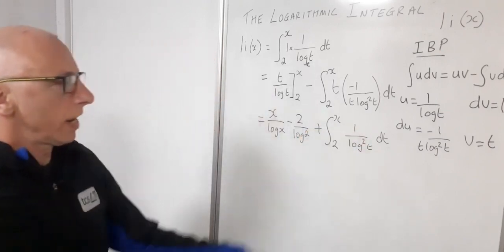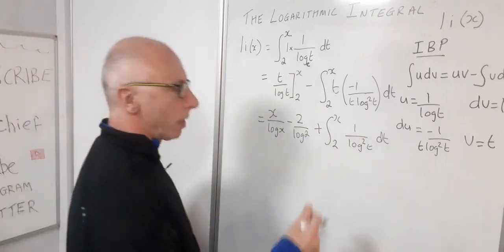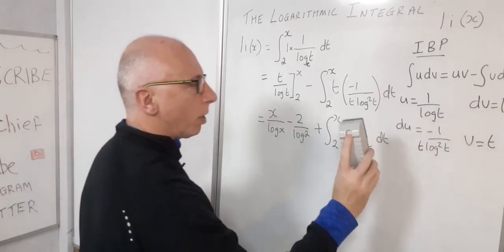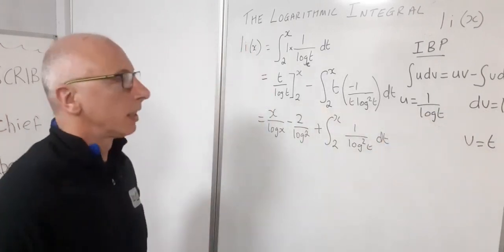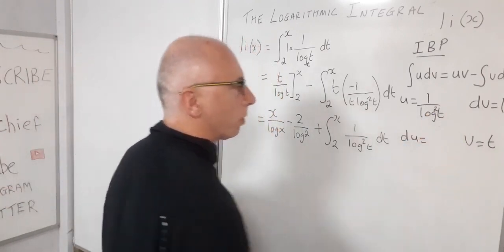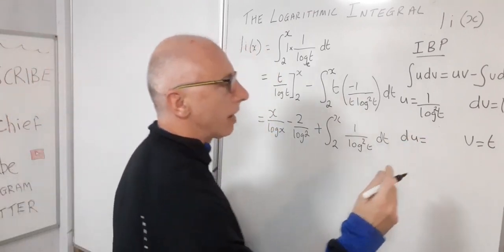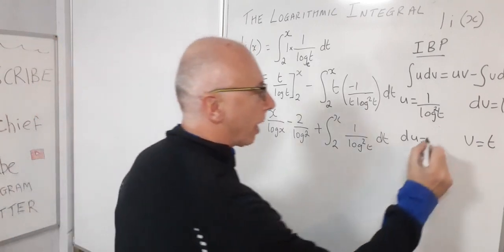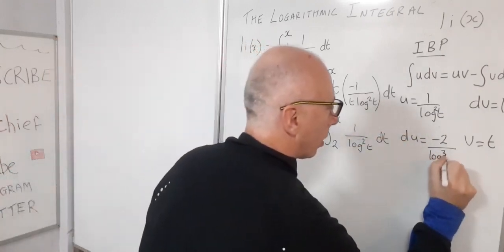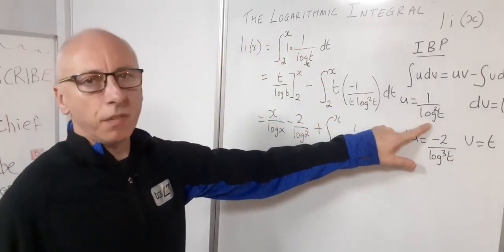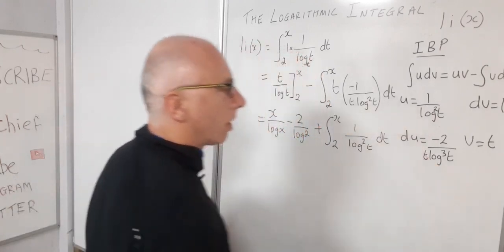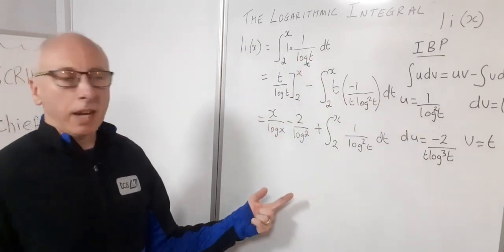We now need another round of integration by parts for the integral of 1/log²(t). The setup remains the same: u = 1/log²(t), dv = dt. Taking the derivative: log²(t) is the same as log(t) to the power of −2, so by the power rule and chain rule, du equals −2/(t·log³(t)) dt.